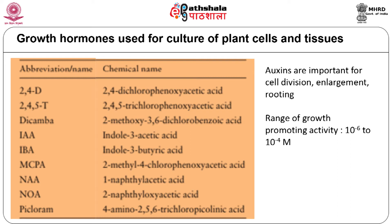These include the auxins, which play an important role in inducing cell division and cell expansion. Auxins are also used for inducing roots in in vitro grown shoots. Auxins are generally used in the concentration range of 10⁻⁶ to 10⁻⁴ for growth promotion, and many of them show herbicidal activity at higher concentrations.